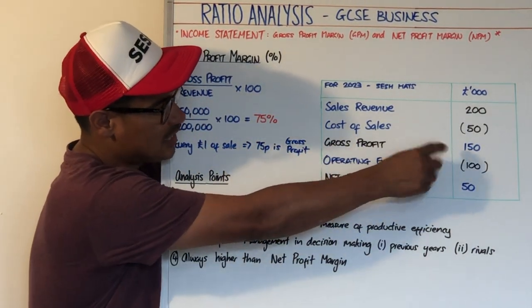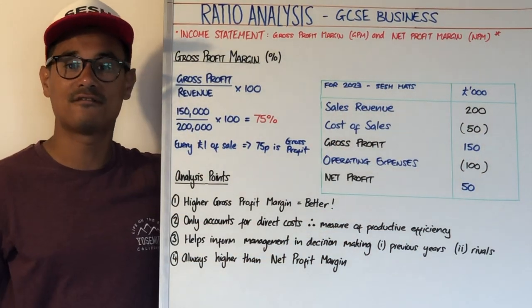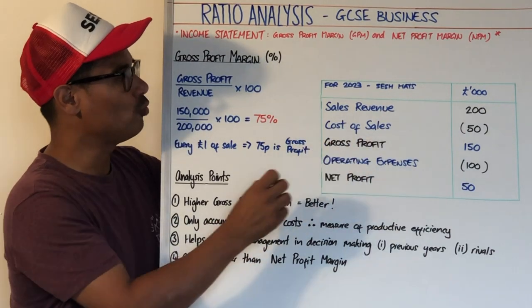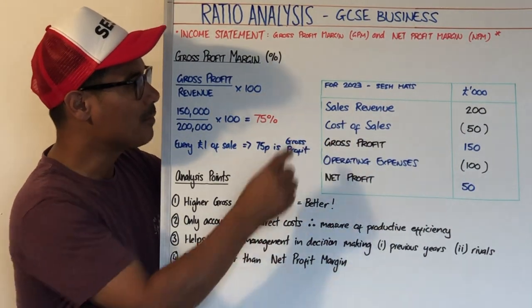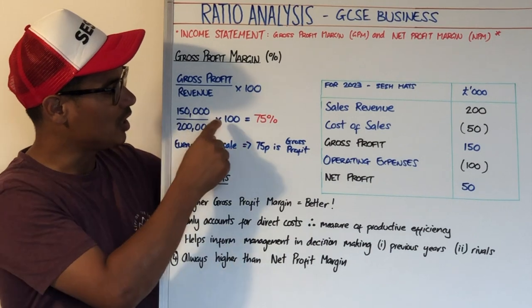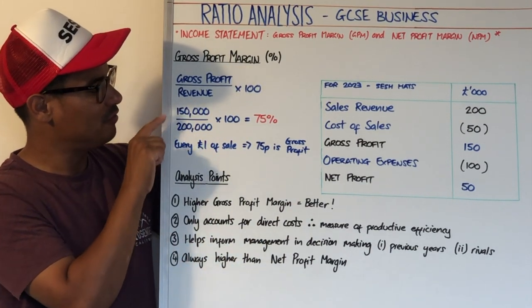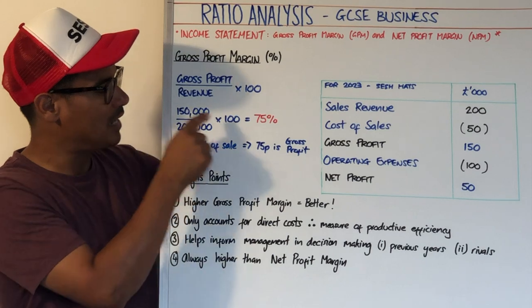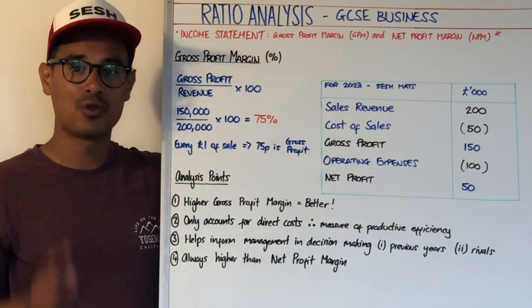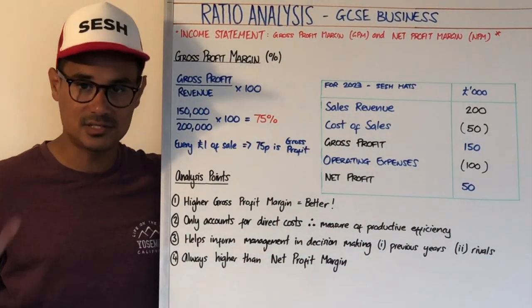Gross profit in this case for Seshat 2023 is £150,000, and we therefore will divide by sales revenue — that's £200,000 — and we need to times it by 100. So £150,000 for gross profit divided by £200,000 times by 100 comes to 75%. One thing to note is that sales revenue and revenue is the same thing.